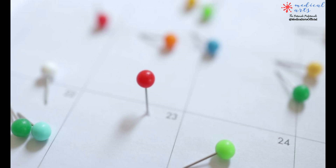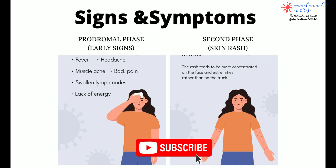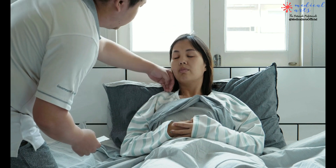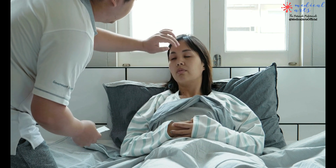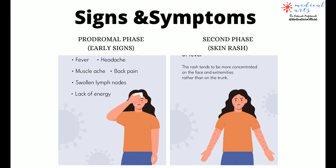Monkeypox infection has two clinical phases. Initial symptoms, called the prodromal period, are characterized by fever, intense headache, lymphadenopathy, back pain, myalgia, and fatigue. A prodromal illness starts after the incubation period ends and lasts 1–5 days.